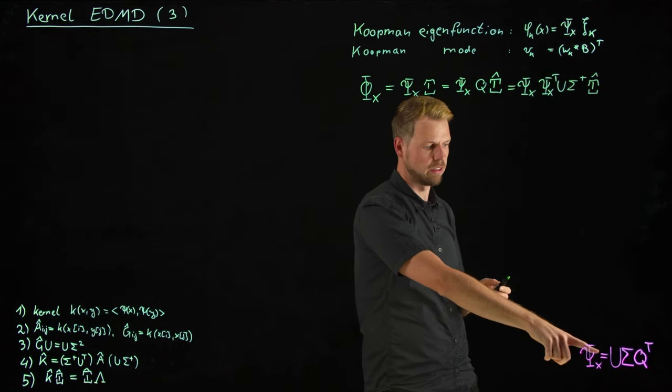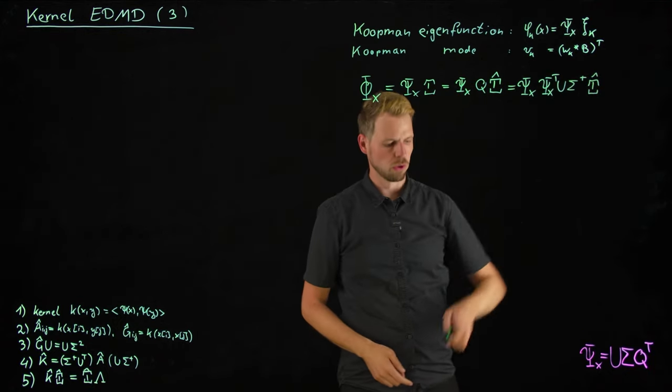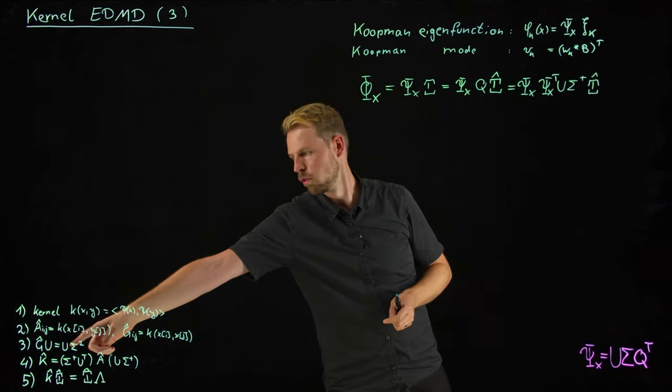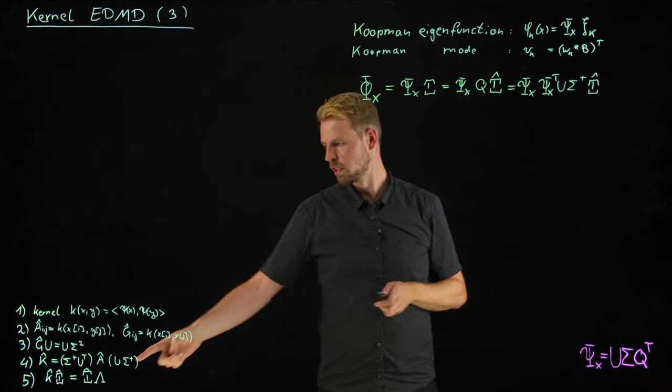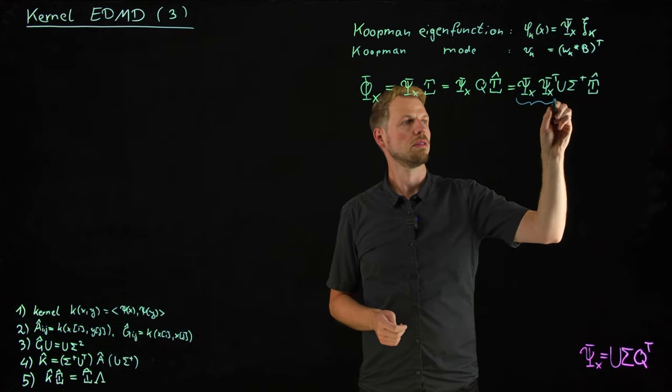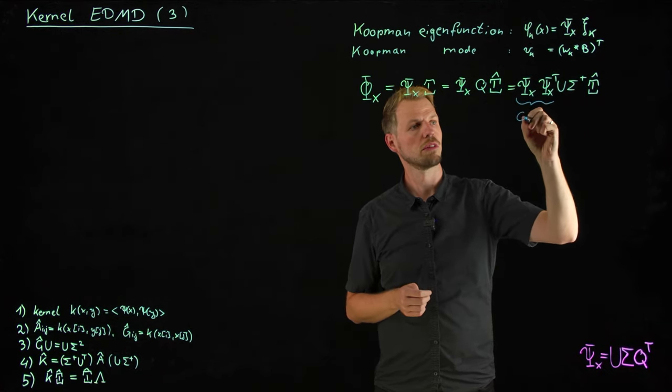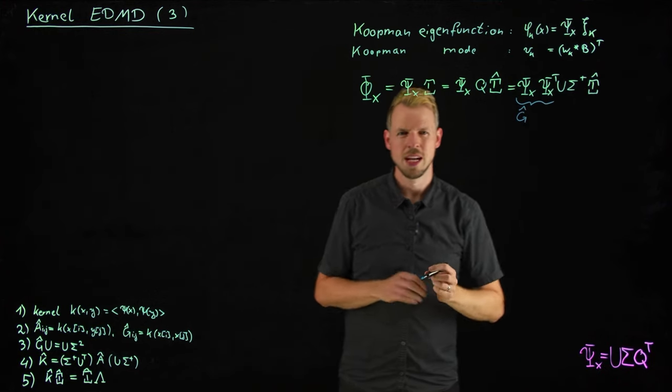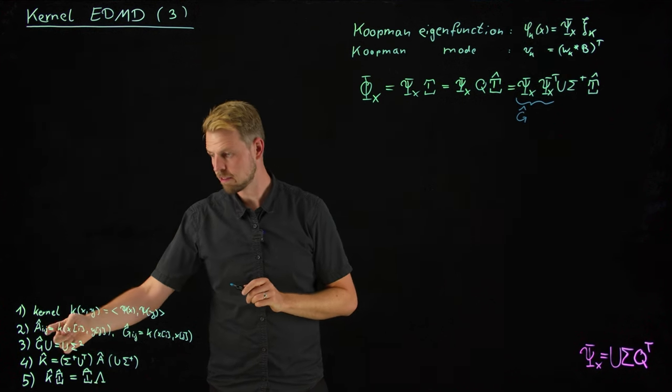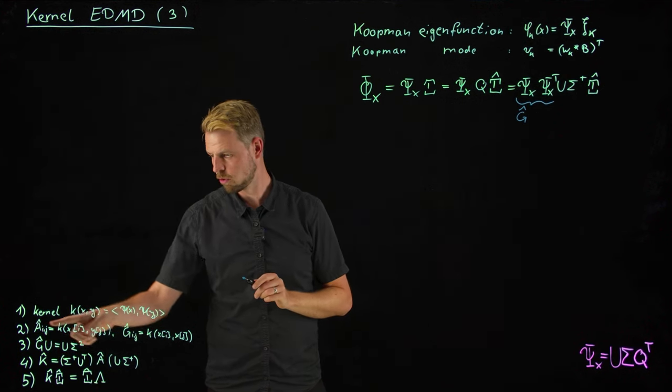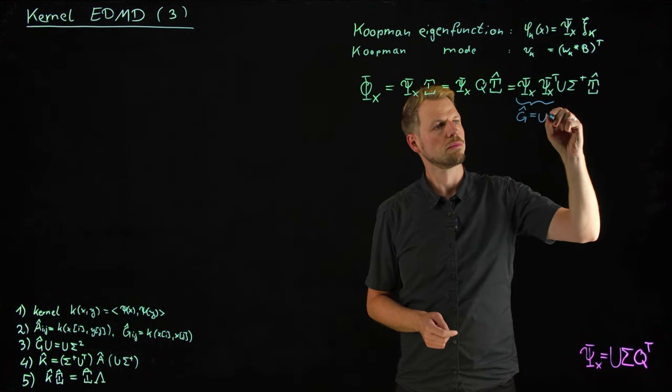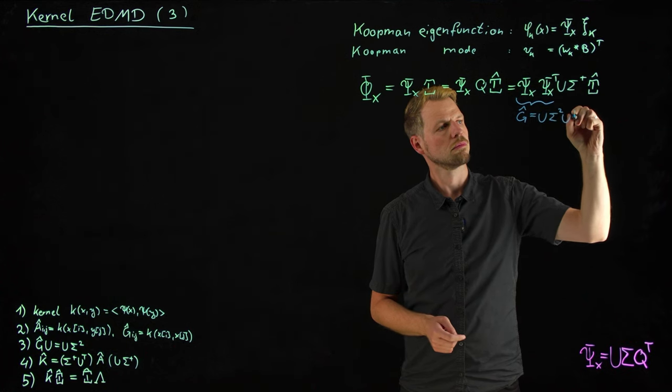So I can replace this by psi X transposed U and then sigma inverse. This is simply using the SVD and the definition of how to invert and then transpose. And what I gain is the fact that this is known, this is known. I have computed this from equation three and five. And these two now, if you look closely, together form my G matrix, or the G hat matrix. And this is very nice because the G hat matrix can also be replaced by multiplication with U transposed from the right. So this gives me U sigma squared U transposed.